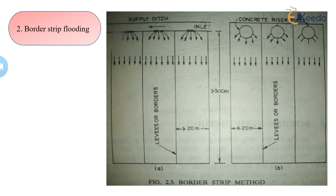Our second technique of irrigation is border strip flooding. As seen in the image, supply is received through the main ditch into a supply ditch, and outlets are provided at the head of each plot. The plot is divided and separated by borders so that the advancing sheet of water covers the entire width of the strip. The plot is divided into rectangular shapes by levees or borders, and the height and alignment of these borders is sufficient to prevent overtopping of water.